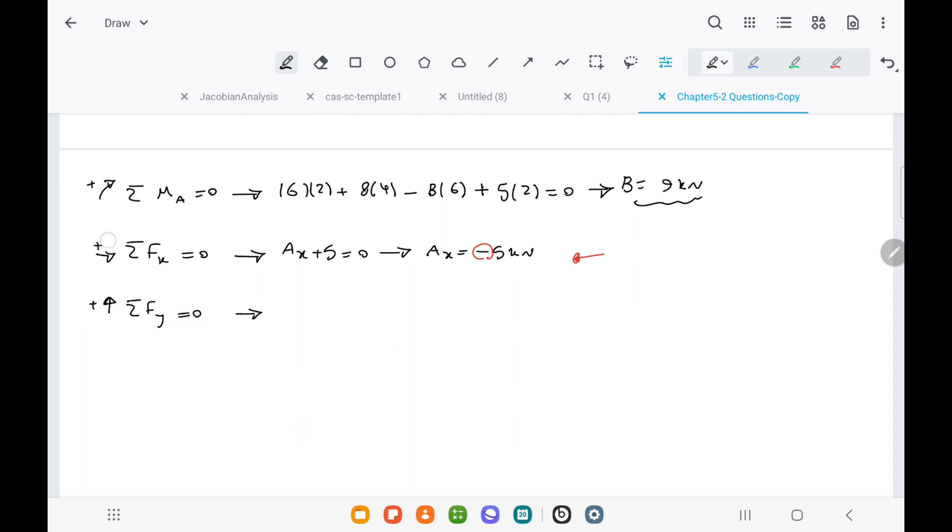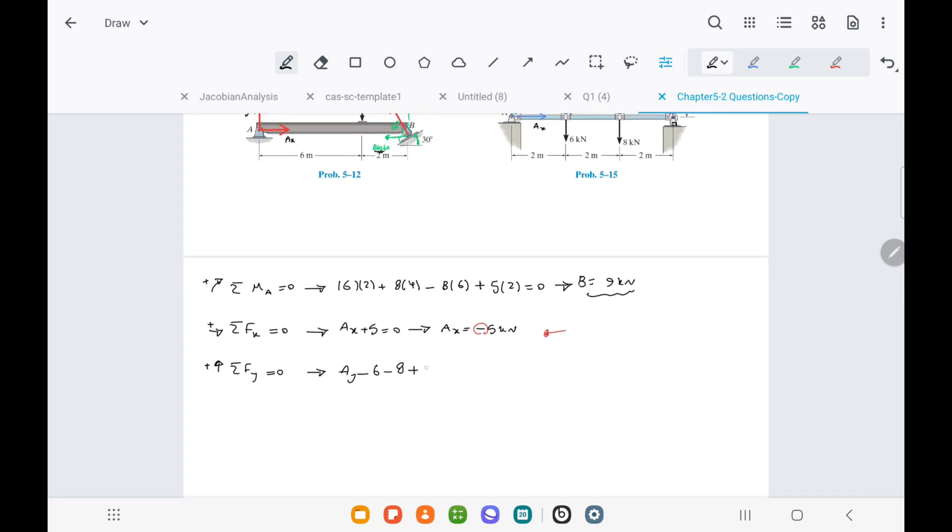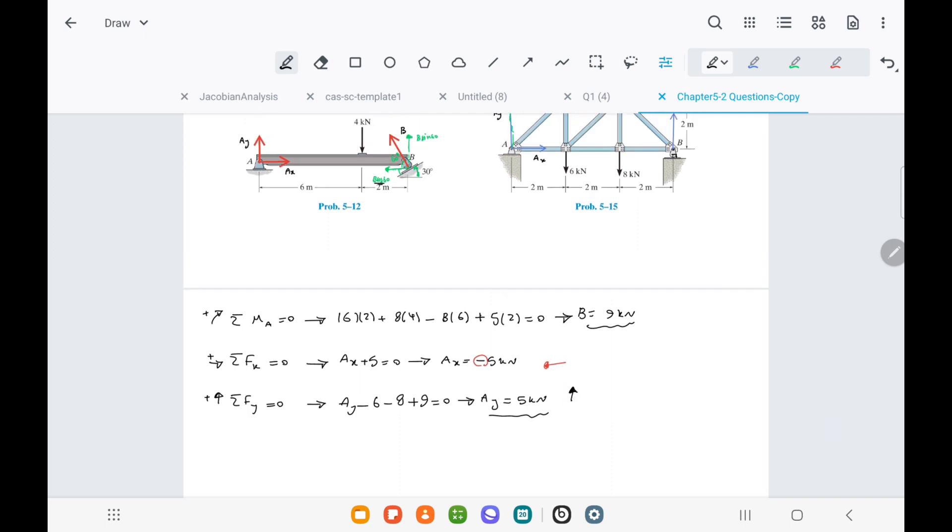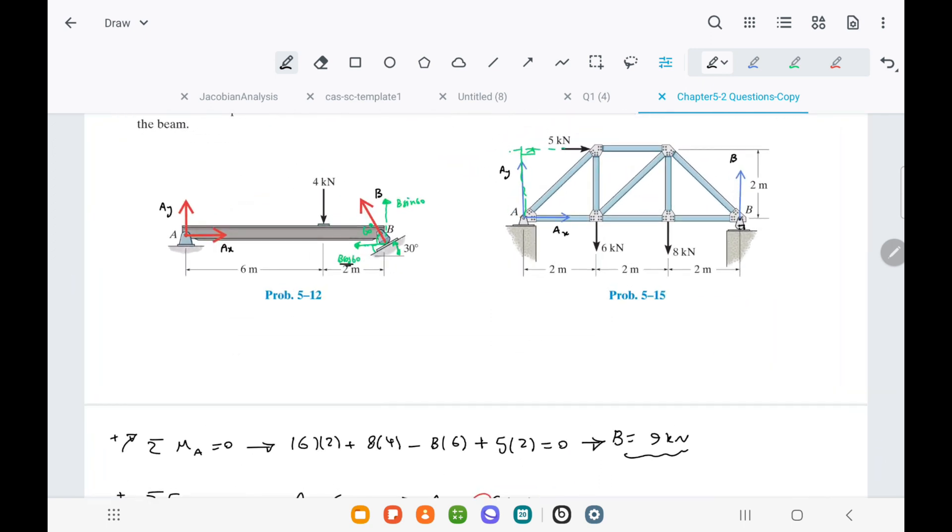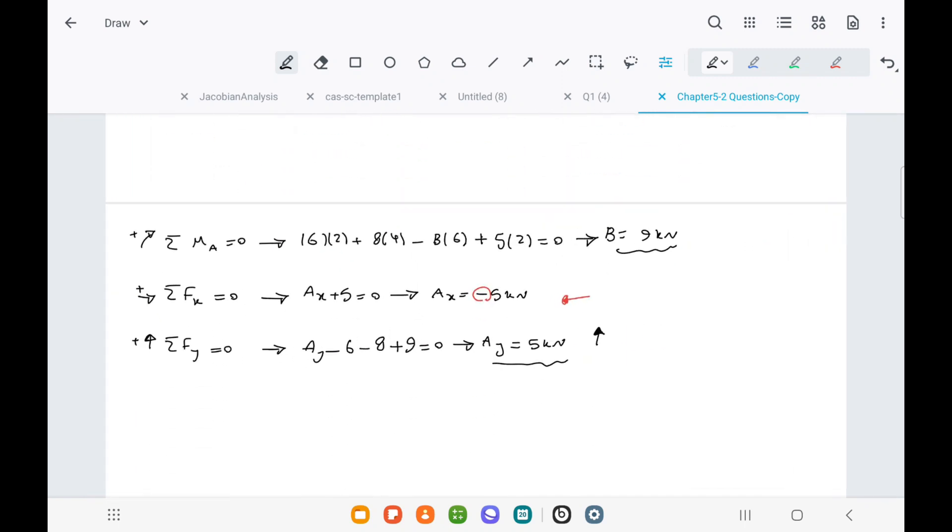Lastly, we can use the equation of sigma Fy, the sum of forces in the vertical direction equals zero, to calculate Ay. By adding the forces in the vertical direction, including the reaction force at joint B, we can find that Ay equals 5. The positive value indicates that the initially assumed direction was correct.